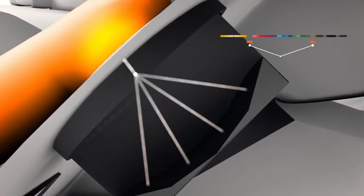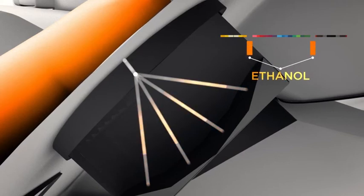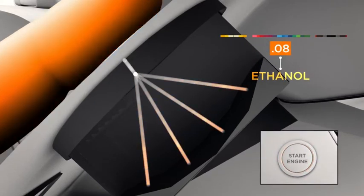Alcohol absorbs specific wavelengths of light. By measuring the light's intensity, the system can precisely pinpoint the driver's blood alcohol level.